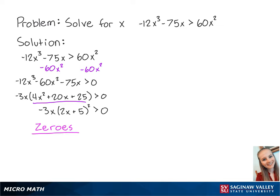Now we can find the values of x that make the left side of the inequality equal to 0, using the equations negative 3x equals 0 or 2x plus 5 equals 0. For the first equation, we get x equals 0, and for the second equation, we get x equals negative 5 halves.